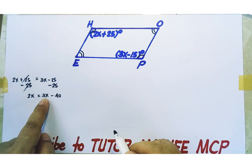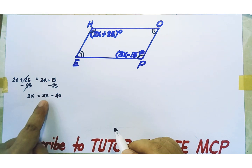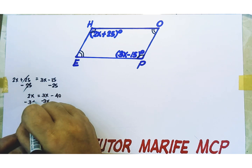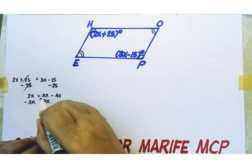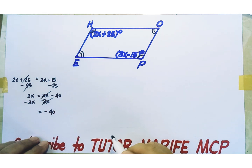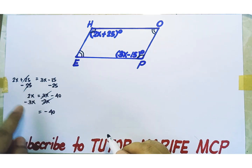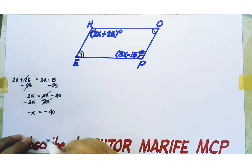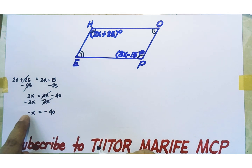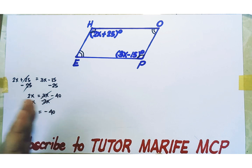Let's eliminate the variable term on the right side of the equation by subtraction property of equality. Subtract 3X from both sides of the equation — right side minus 3X, left side minus 3X. Additive inverses cancel out each other on the right side of the equation; we are left with negative 40 on the right side. The left side becomes 2X minus 3X, which equals negative X. The invisible numerical coefficient of negative X is negative 1. We want positive X because we are solving for the value of X.